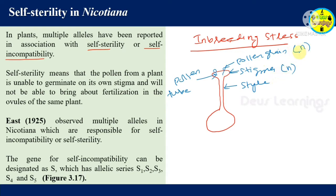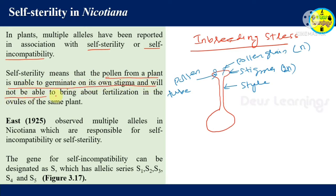To clarify: the pollen grain is haploid, the stigma is diploid, and the egg cell inside the ovule is also haploid — all products of meiosis. Self-sterility means the pollen from a plant is unable to germinate on its own stigma and will not bring about fertilization in the ovules of the same plant.